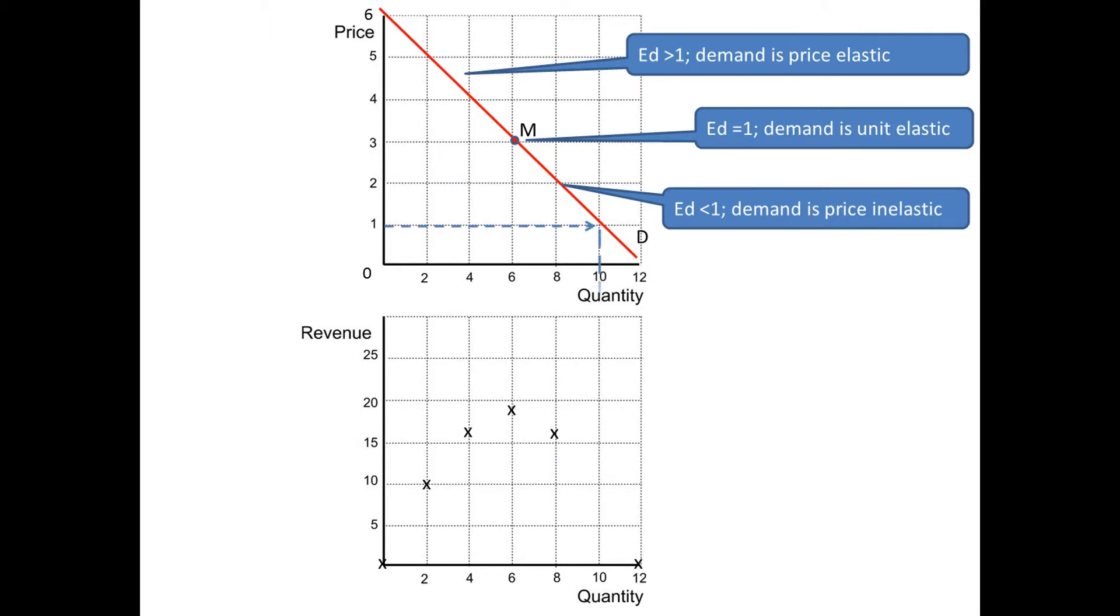Drop the price to 1, 1 times 10 is 10. So, we mark that with an X. And we can see that, looking at this, the way in which these Xs are marked on the bottom graph and joining them...